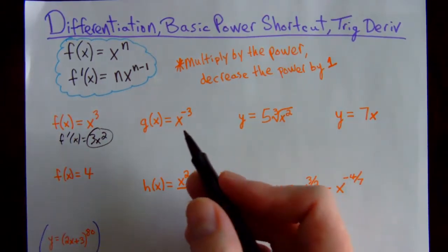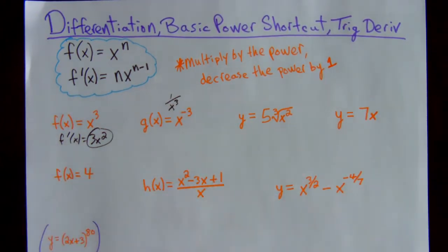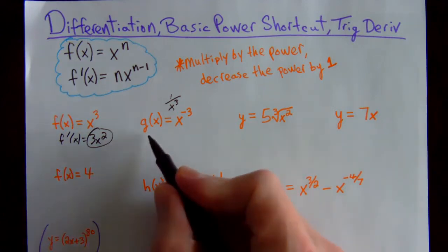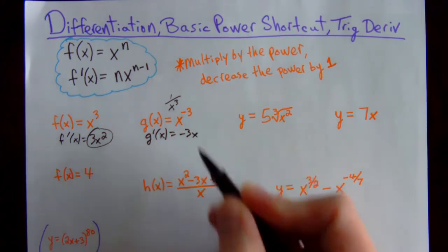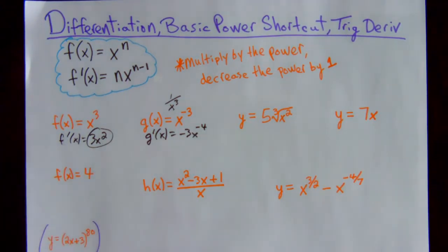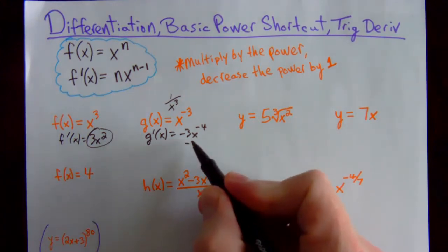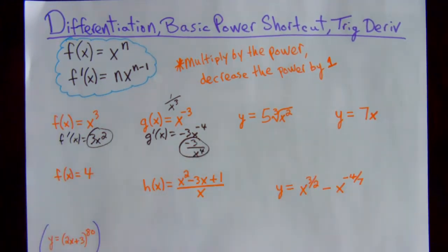If you have negative exponents, that's fine. If the problem starts off like 1 over x to the third, rewrite it as x to the negative 3 because you want x raised to a power before you take the derivative. Then multiply by the power and decrease that power by 1 — make sure you go to negative 4, not negative 2. The general rule is we always get rid of negative exponents, so drop that down to the bottom: negative 3 over x to the fourth.